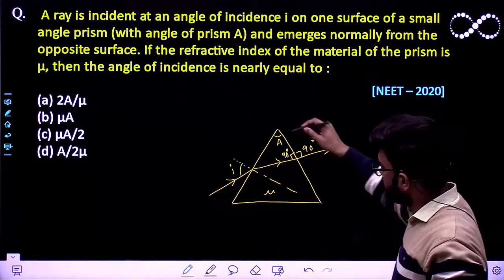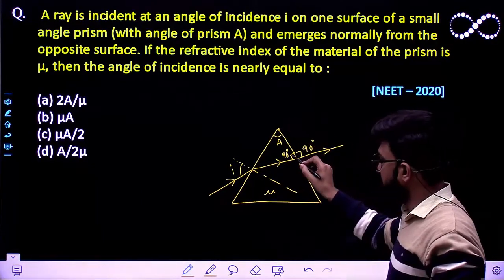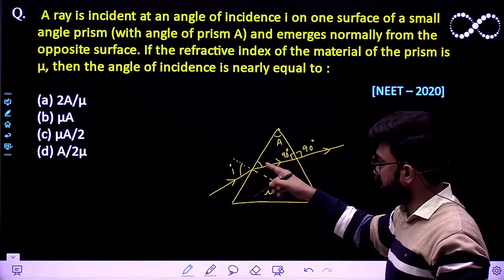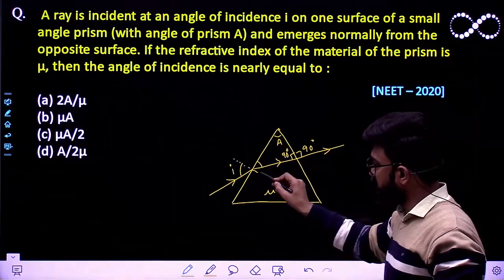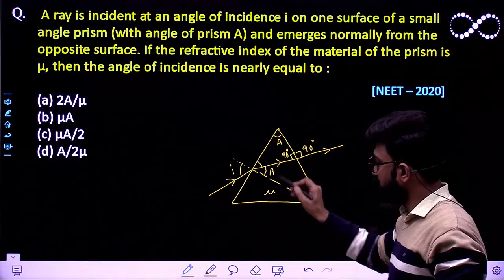So we know that if this angle is 90 degrees and this angle is A, then this must be equal to 90 minus A. If this is 90 minus A, then this angle must be equal to A.